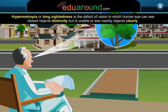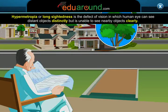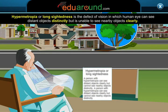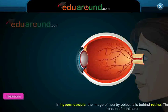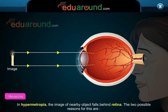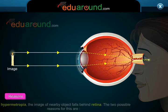Hypermetropia or long-sightedness is the defect of vision in which the human eye can see distant objects distinctly but is unable to see nearby objects clearly. In hypermetropia, the image of a nearby object falls behind the retina. The two possible reasons for this are as follows.